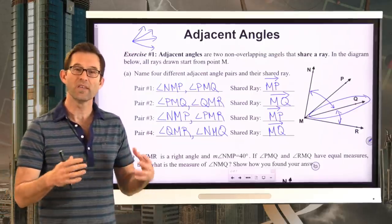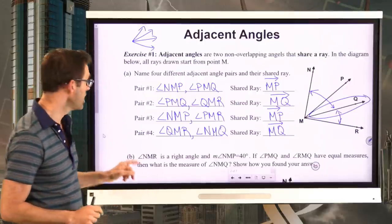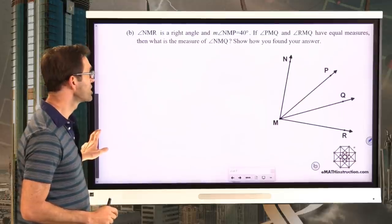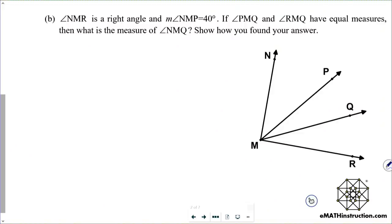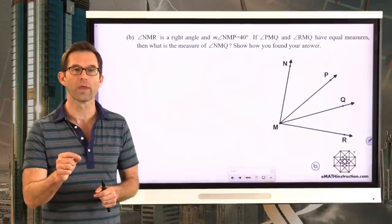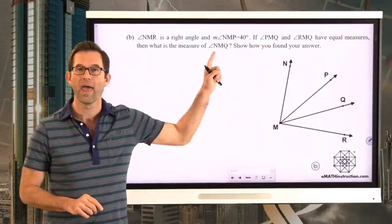Adjacent angles are really important, and we're going to see a little bit of why in part B of this problem. Angle NMR is a right angle, and the measure of angle NMP is 40 degrees. If angle PMQ and angle RMQ have equal measures, what is the measure of angle NMQ? Show how you found your answer. This is quite a good problem, and you have everything in your toolkit to figure it out. Pause the video and see if you can find the measure of angle NMQ.